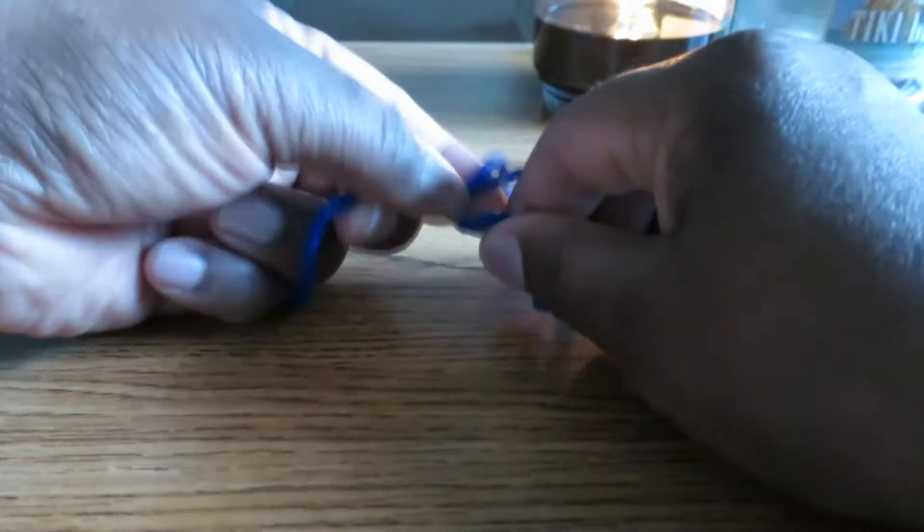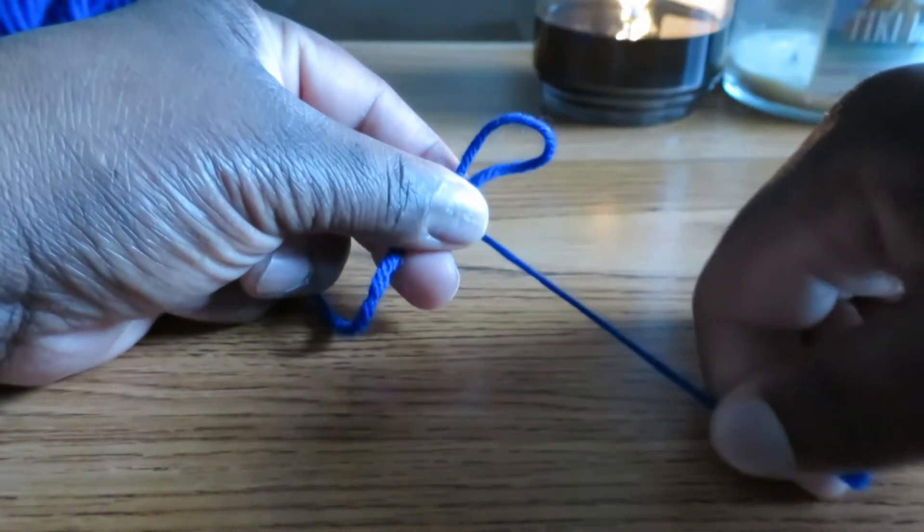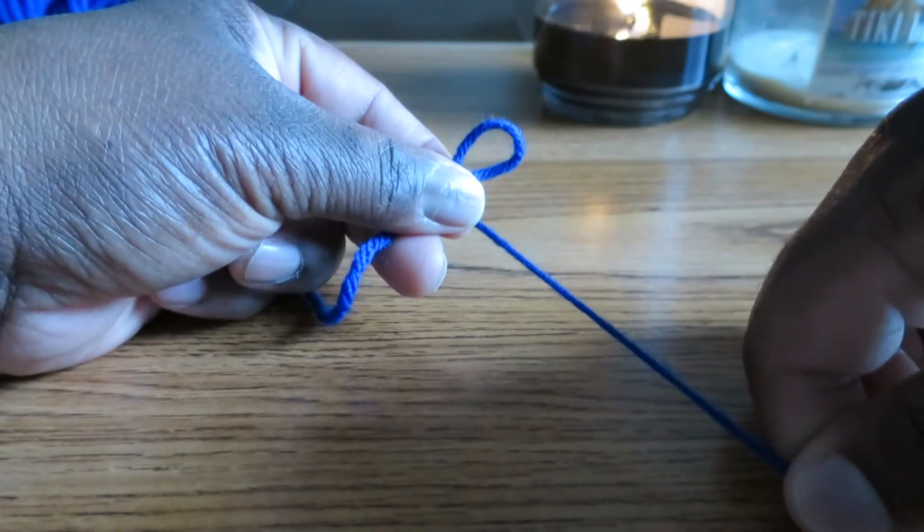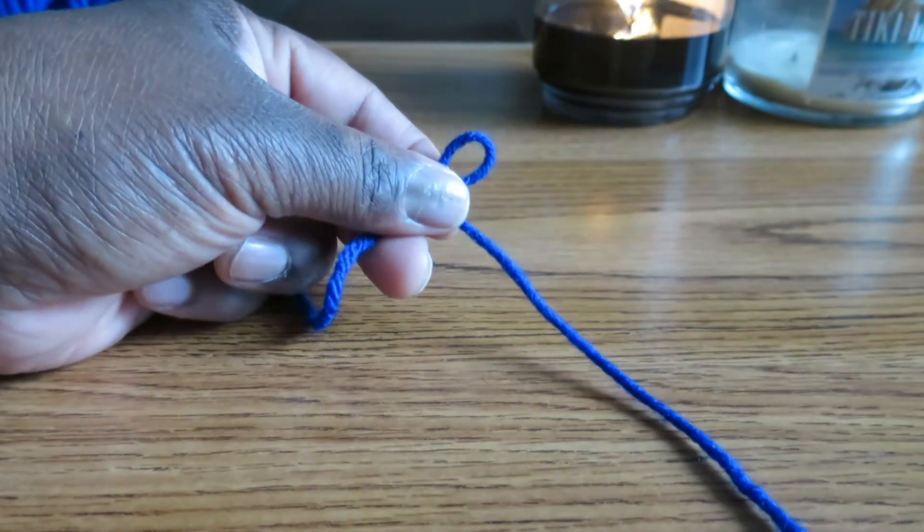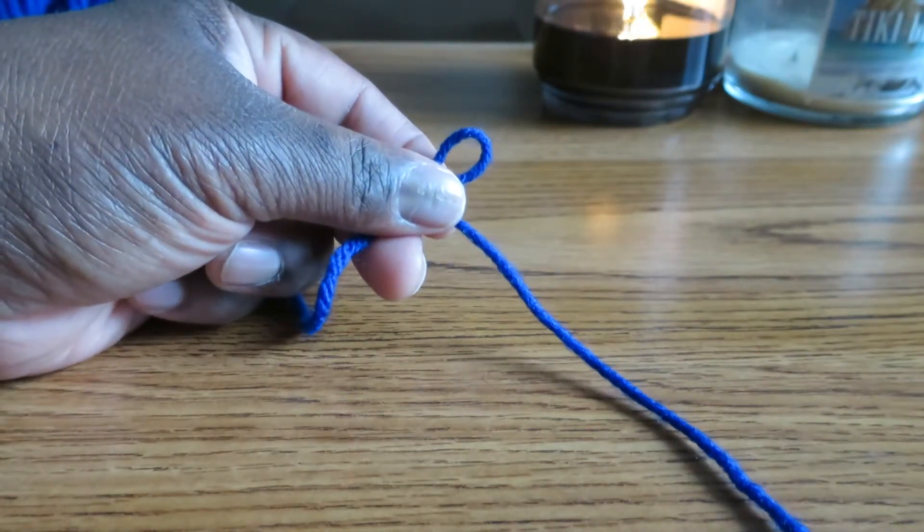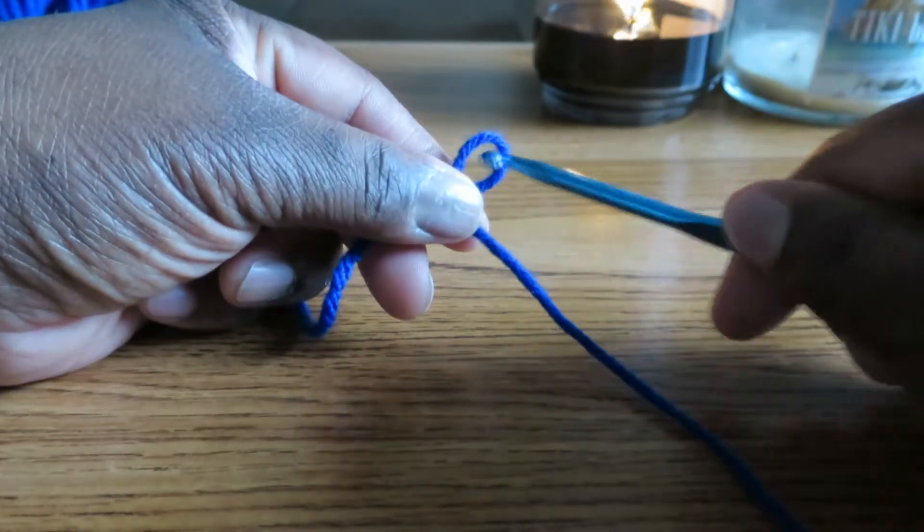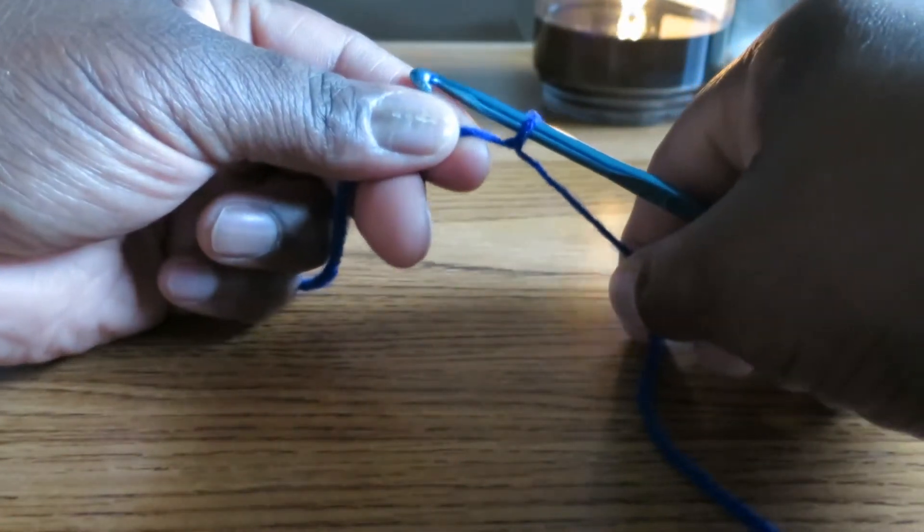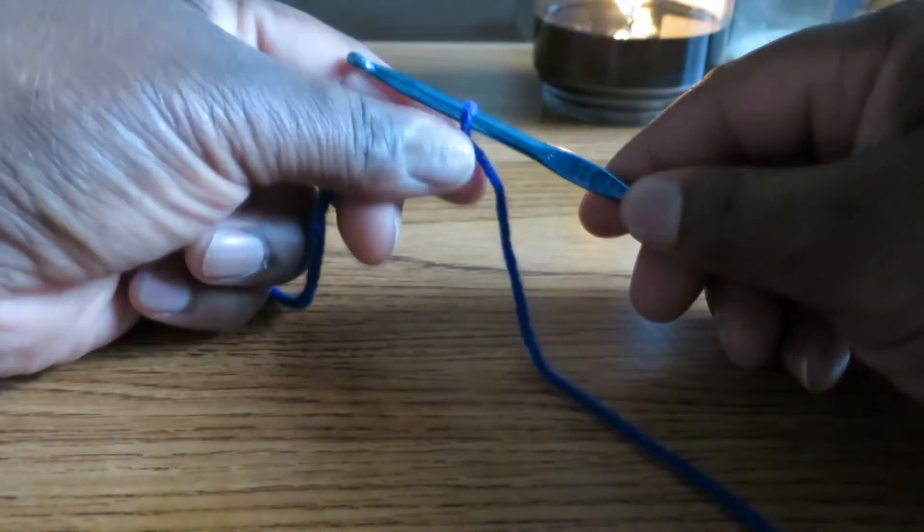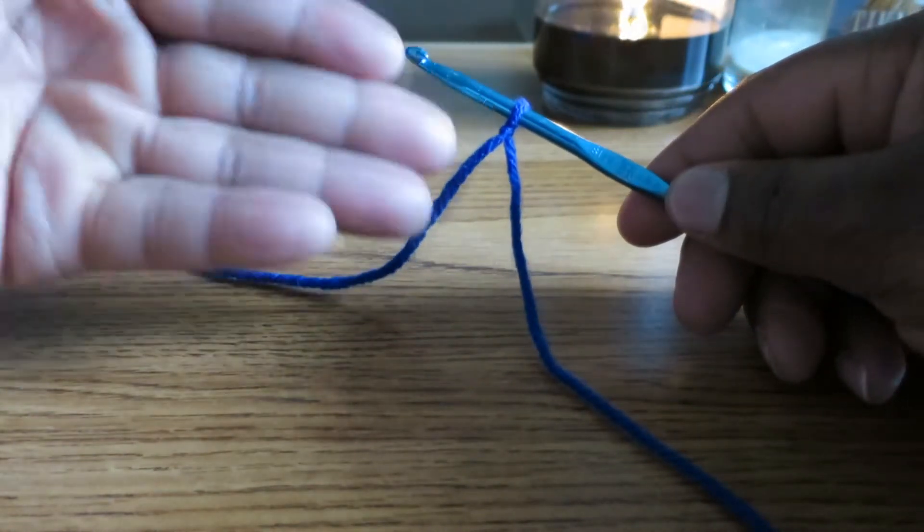And then we're going to pull on this tail to make the loop smaller. The reason that we make the loop smaller is because we're going to insert a crochet hook into the loop. And to make it a little bit more snug, you just continue pulling. And this is how you make a slipknot.